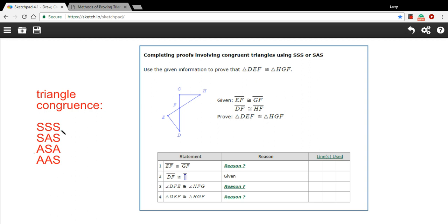One is SSS. That stands for side, side, side. If all the sides of two triangles are congruent to each other, then the triangles are congruent. So that proves triangle congruence.